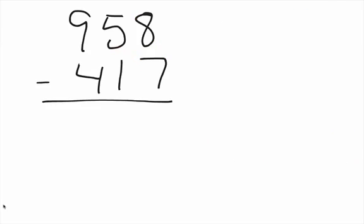Now we have the three-digit numbers. Three-digit subtraction is very similar. First thing you want to do is see if you have to borrow. If you don't, just go left to right. In this situation we don't have to borrow on any, so we say 9 minus 4 is 5, 5 minus 1 is 4, and 8 minus 7 is 1. So we get our answer there.